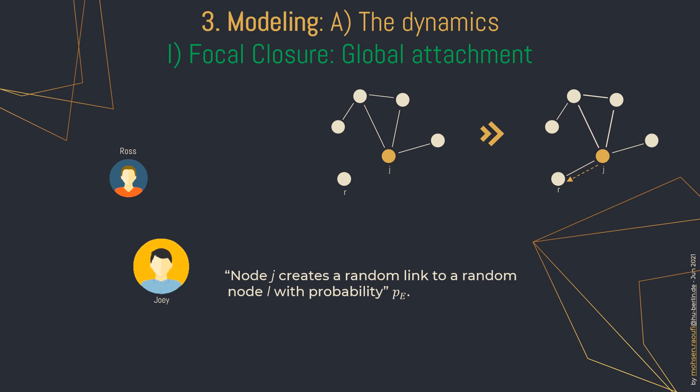Focal closure, or exploring, is the mechanism where one node connects to another random node with probability PE. This mechanism helps the node to connect beyond their communities and increase their global attachment. This is exactly the same thing that happened between Joey and Ross in our story.